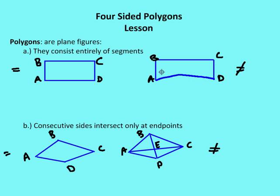Secondly, polygons consist of consecutive sides that intersect only at endpoints. On the left-hand side we have an example of a polygon. On the right-hand side we don't, because consecutive sides AE and EC intersect at a point that is not an endpoint — E has several connections: BE, DE, CE, and AE. So the example on the right is not a polygon.